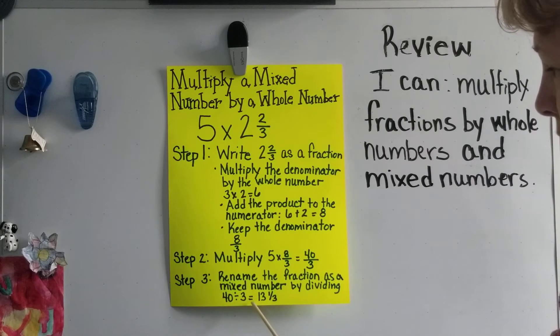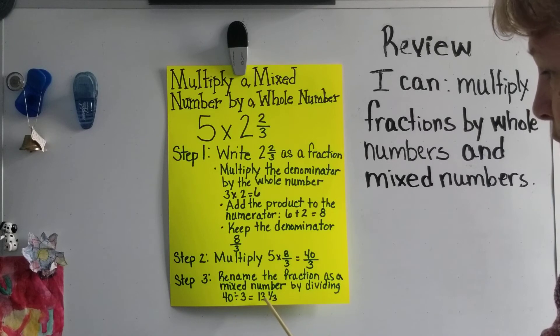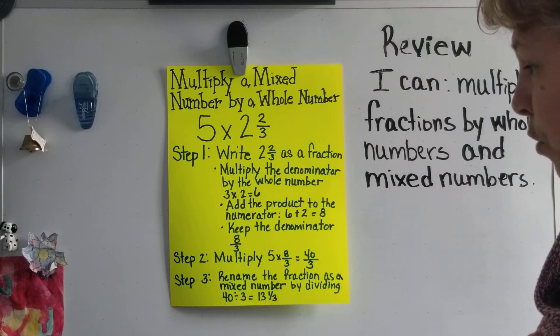Equals 13 and one-third. So on the reverse side, to check our calculations, we can multiply three times 13. Three times 13 is 39, and then we add our numerator one to get 40 thirds. So 13 and one-third is equal to 40 thirds.